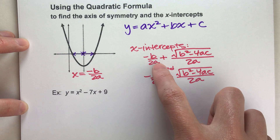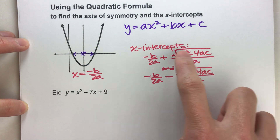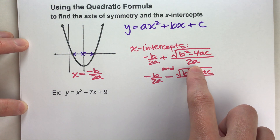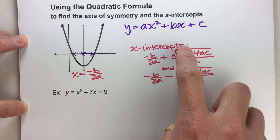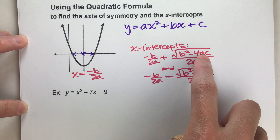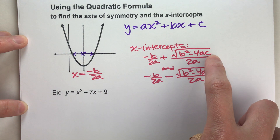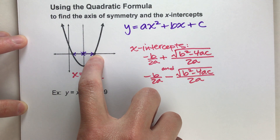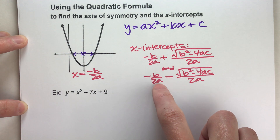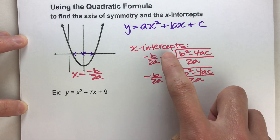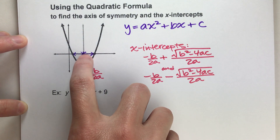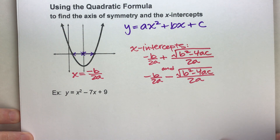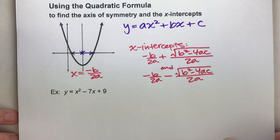Here are the x-intercept formulas. We have negative b divided by 2a — that's the axis of symmetry — and if we add a little bit more, we find one x-intercept. That little bit is the square root of b squared minus 4 times a times c, divided by 2 times a. And if we take the axis of symmetry and subtract that same amount, we get the other x-intercept. The formula looks a little complicated, but it's really just calculator work after a while.